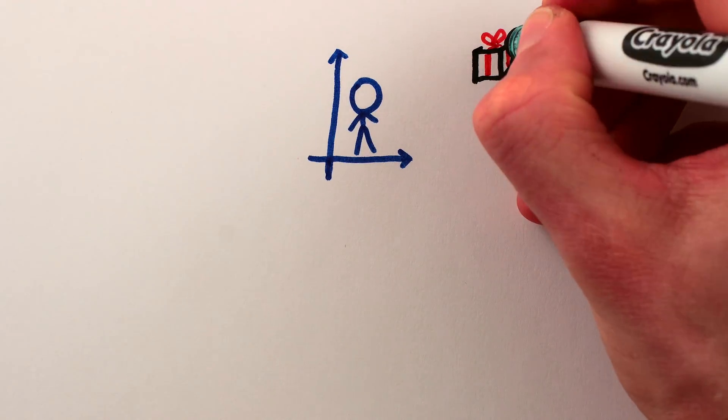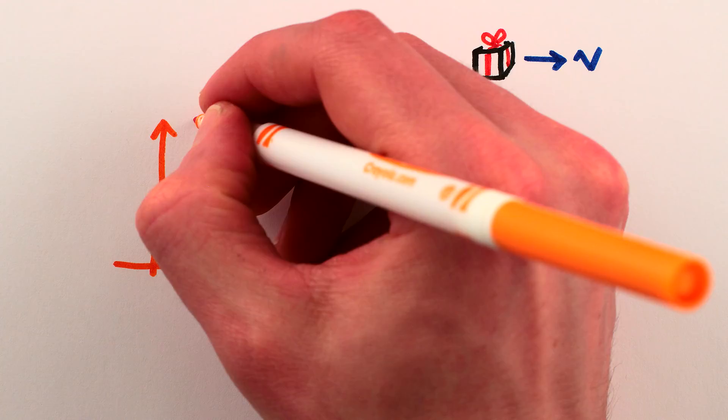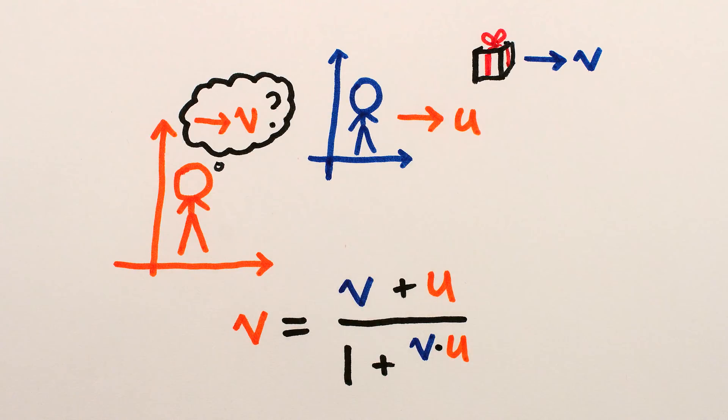If we have an object moving at a speed v relative to your perspective, and you're moving relative to me with speed u, then the equation that describes precisely what speed the object is moving relative to my perspective is v from my perspective equals v from the moving perspective plus u all over 1 plus v from the moving perspective times u over c squared, where c is the speed of light.